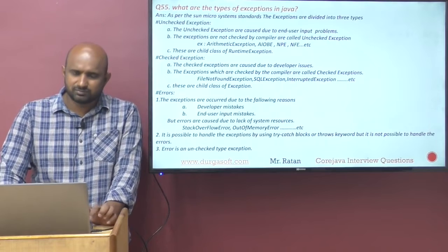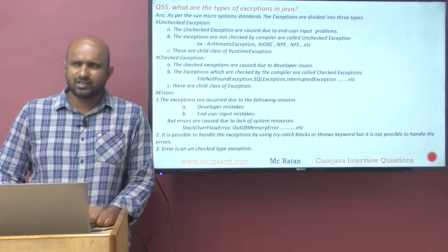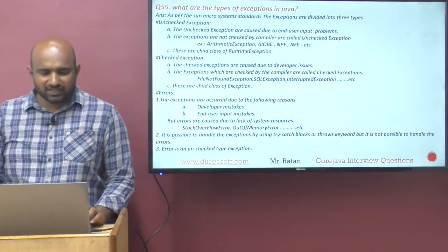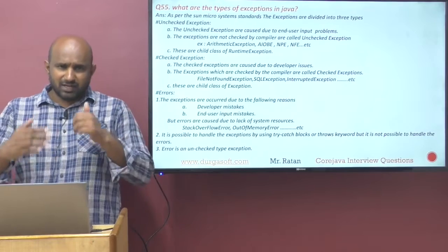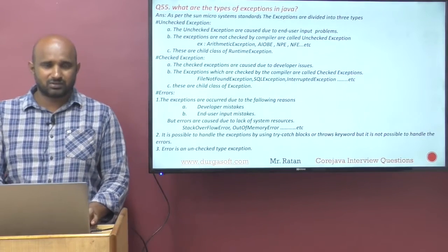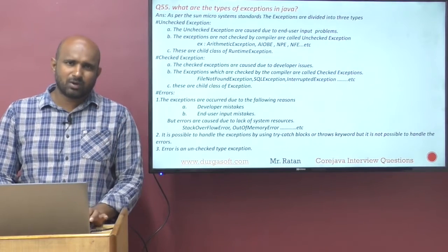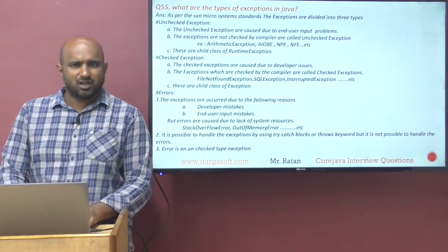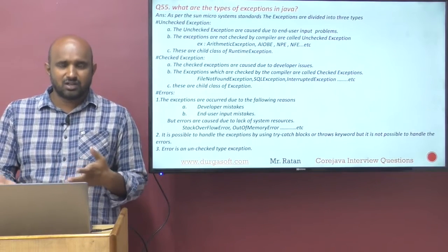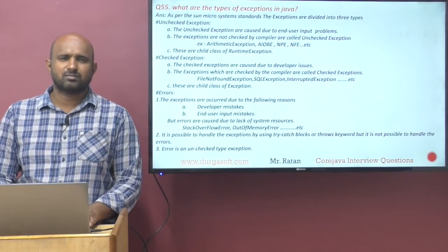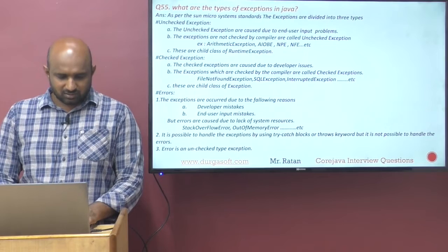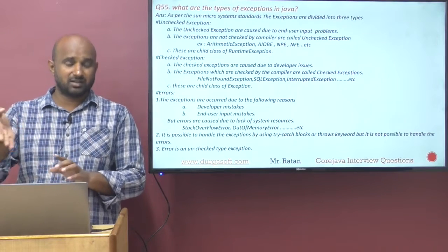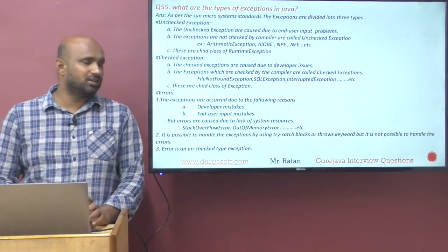When there are developer mistakes, the compiler will immediately interfere and alert the developer. When you compile the application, you will get an alert message. The compiler is not generating an exception — it is just giving information to the developer, saying: 'You are trying to make a mistake, please handle the exception.' Based on that alert, you can write try-catch blocks or use the throws keyword. The exceptions which are checked by the compiler are called Checked Exceptions.